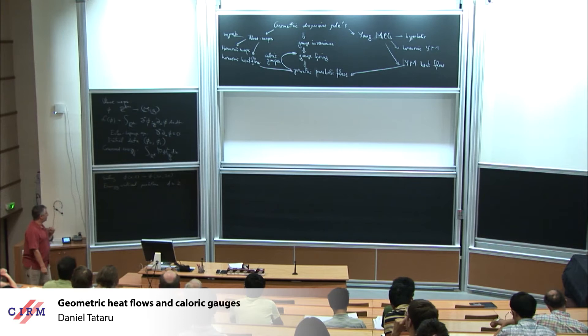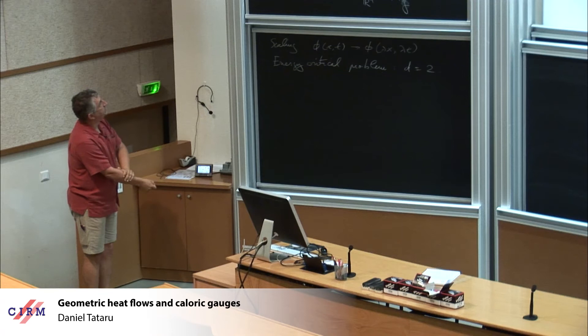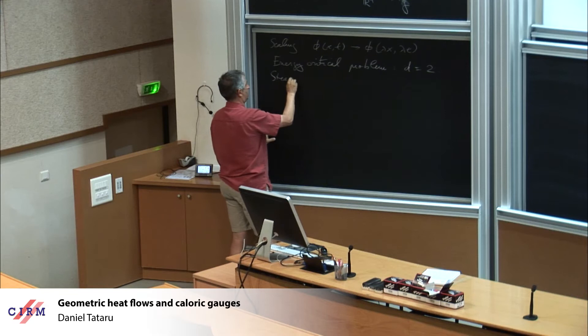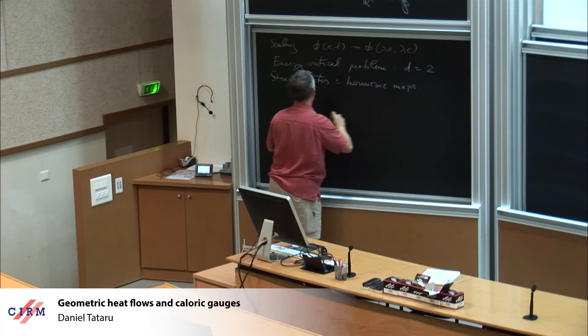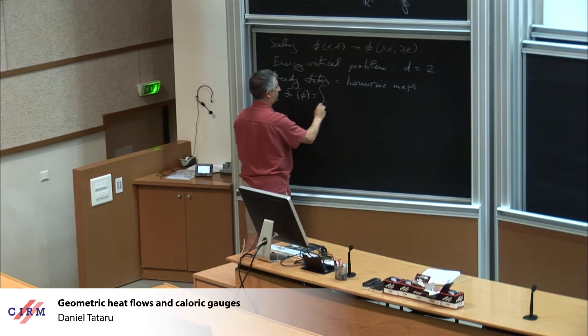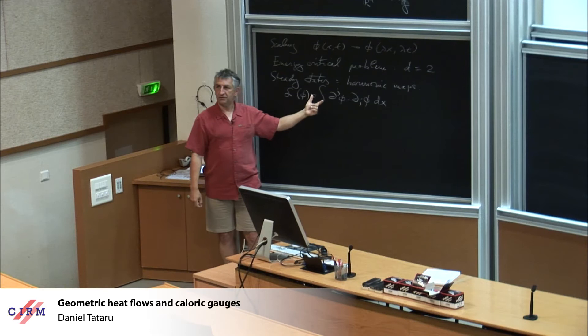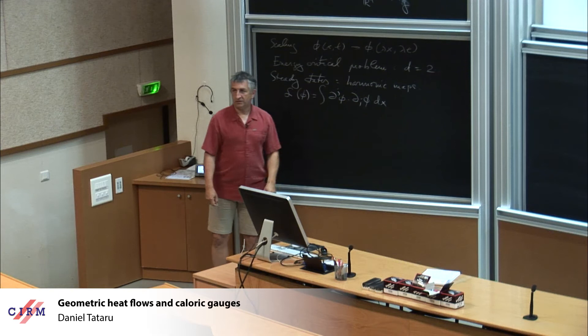We've heard in several other talks at this conference how when you try to solve an evolution equation like this, one important thing to understand is what are the steady states of this equation. The steady states of this equation are harmonic maps. For harmonic maps, you have the similar Lagrangian: the integral of d_j phi · d_j phi dx. I'm going to follow a standard convention where I use Greek indices for space-time and Roman letters for just spatial indices.